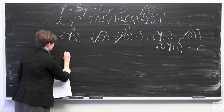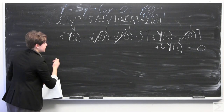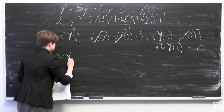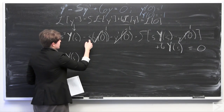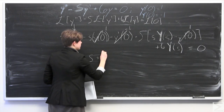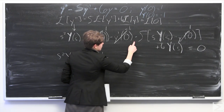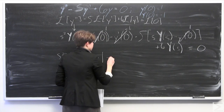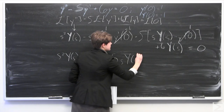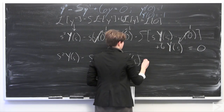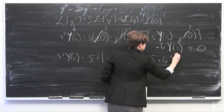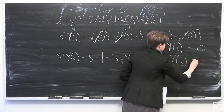I'll rewrite this on the line below for clarity. So we have s squared times big Y(s), minus s times 1 which is just s, minus a negative 1 which is plus 1. Then, distributing the 5, we get minus 5s times big Y(s), and negative 5 times negative 1 is positive 5. Plus 6 times Y(s) equals 0.